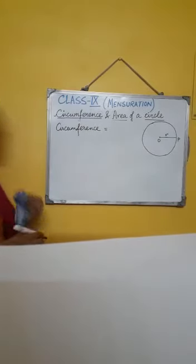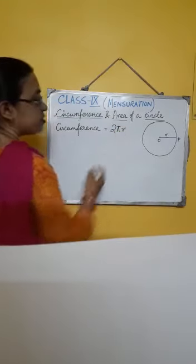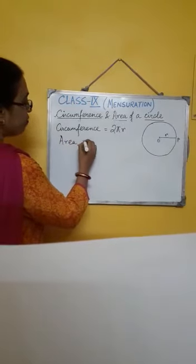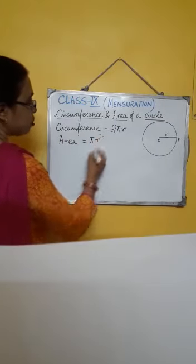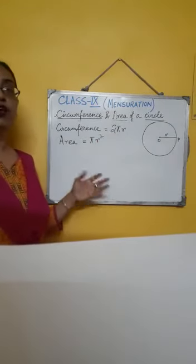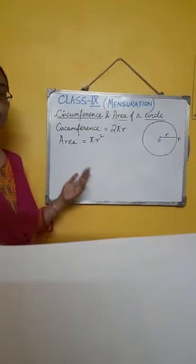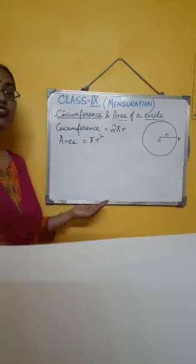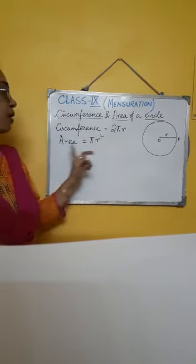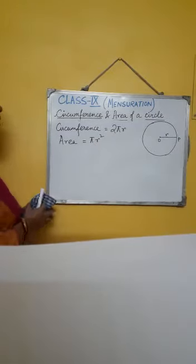The circumference of a circle is given as 2πr, where r is the radius. The area of a circle is given as πr². For pi, use 22/7 or 3.14 according to what the problem mentions. If it is not mentioned, take it to be 22/7.